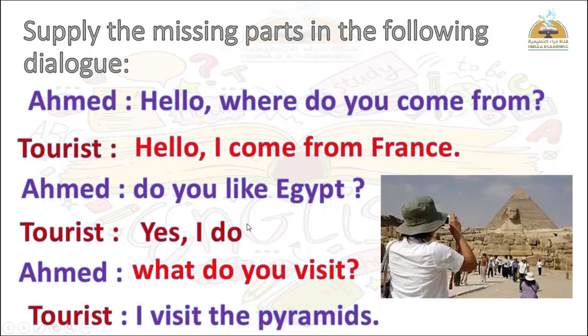يلا نقرأ الديالوج مرة واحدة. Ahmed: Hello. Where do you come from? Tourist: Hello. I come from France. Ahmed: Do you like Egypt? Tourist: Yes, I do. Ahmed: What do you visit? Tourist: I visit the pyramids.